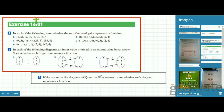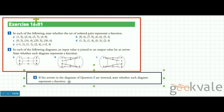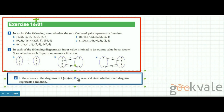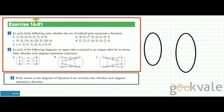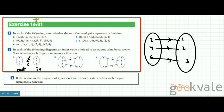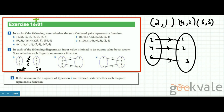Question 3 is related to question 2: if the arrows in the diagram of question 2 are reversed, state whether each diagram represents a function. For the first diagram, reversing the arrows gives us inputs 2, 4, 6 and outputs 1, 2, 3. Input 2 maps to output 1, input 4 maps to output 2, input 6 maps to output 3. Each input is unique, the domain is not repeated — so it is a function. Remember: each input must be unique.